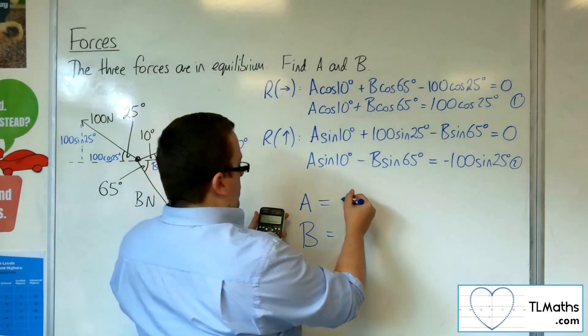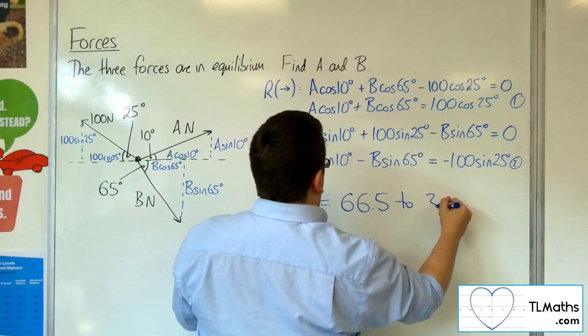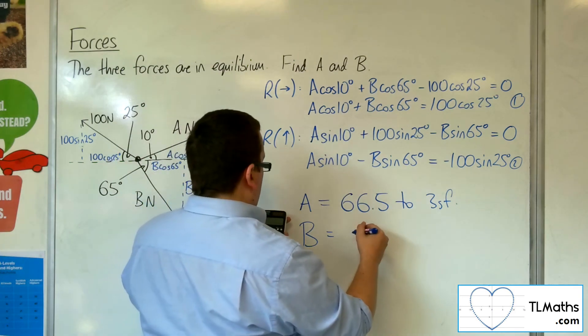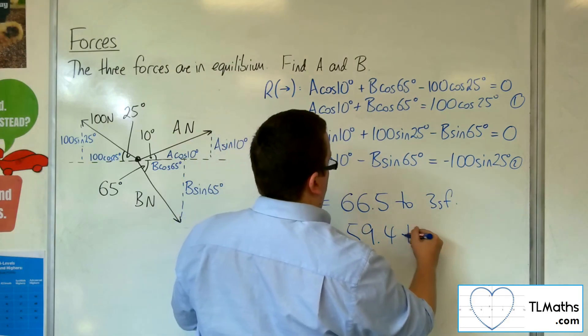Press equals, and we get 66.5 to 3 sig fig for A, for the X, and for the Y, for B, 59.4, 59.38. So 59.4 to 3 sig fig.